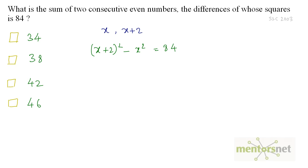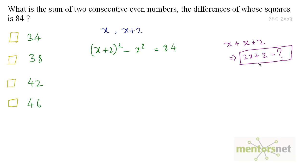What we have to find out is the sum of these two consecutive even numbers. The sum will be x plus (x + 2), which equals 2x + 2, and this is what we have to find. Now let us solve this: (x + 2)² expands to x² + 4x + 4, minus x² equals 84.